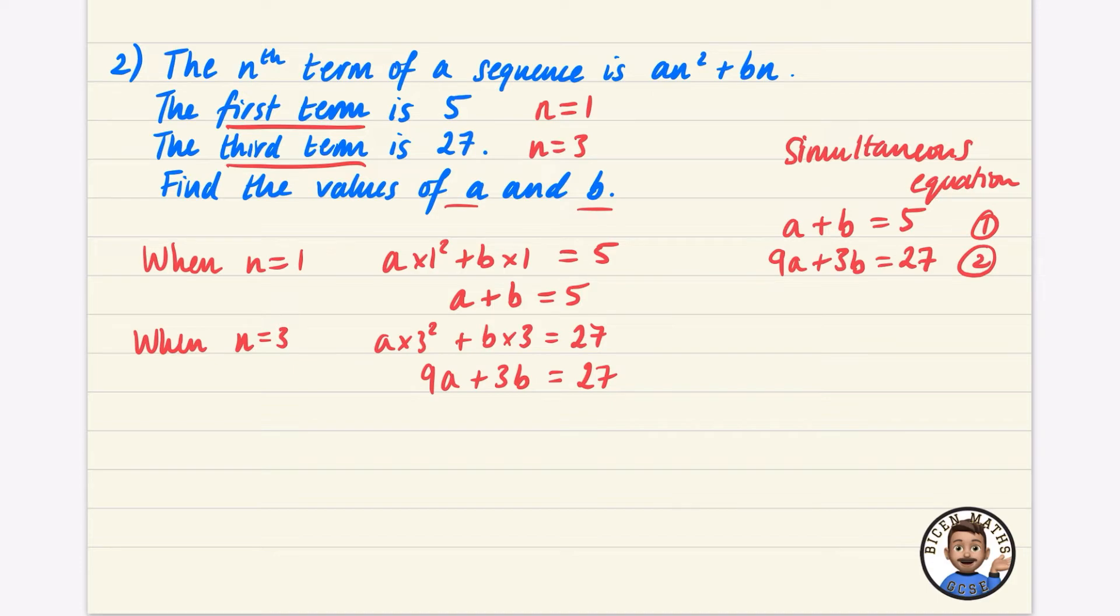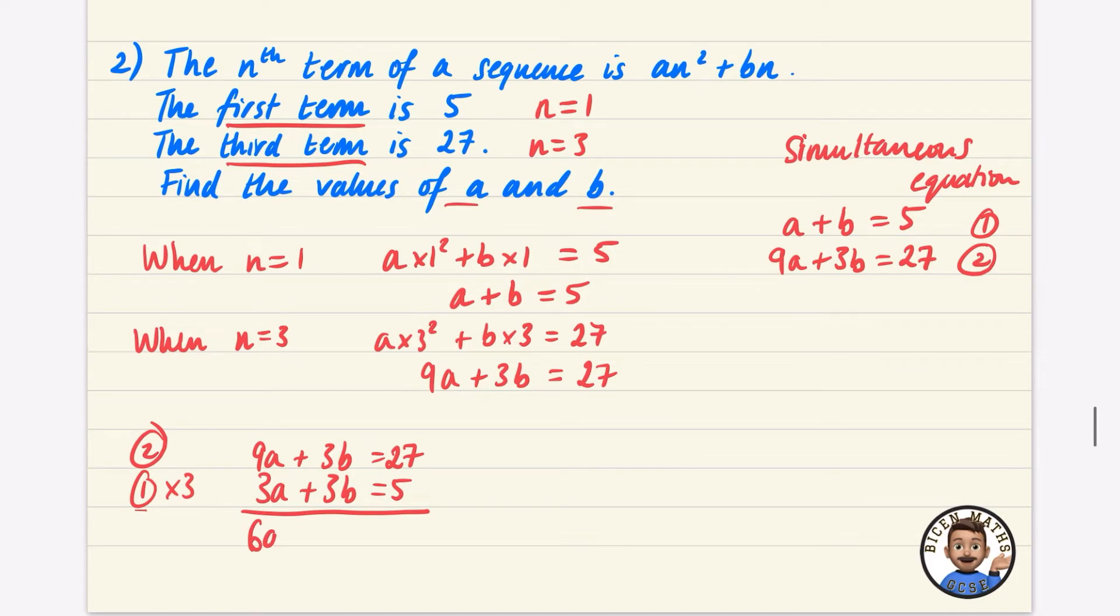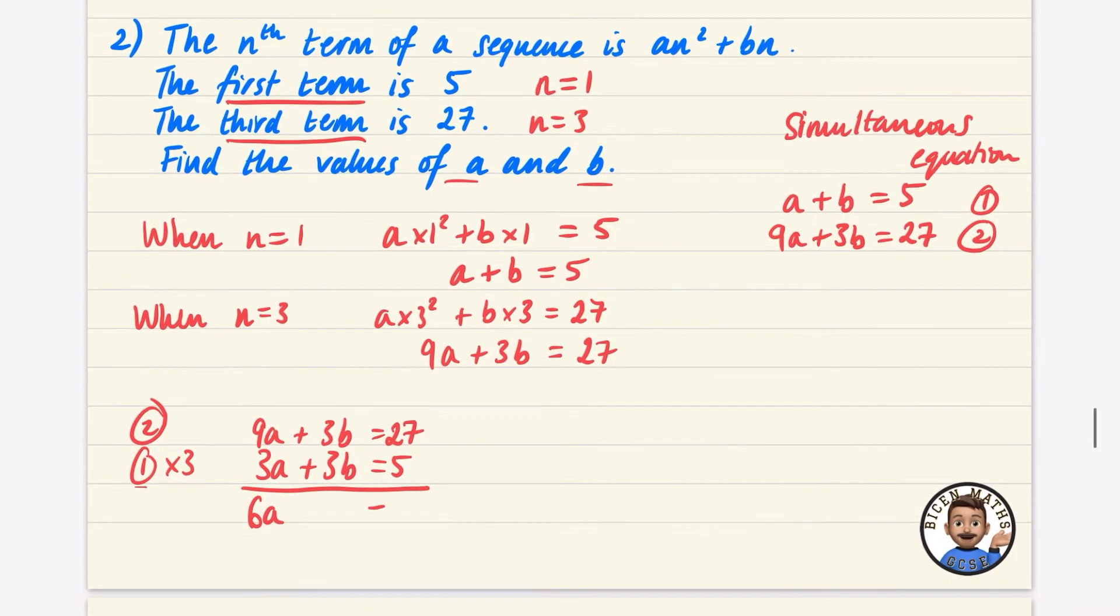So I'm going to do an elimination method here. I'm going to take number one and I'm going to times it by three. So if I take number one and times it by three, I get 3a plus 3b equals 15, and I have 9a plus 3b equals 27. I'm going to write these the other way around so it looks a little bit easier. Now what I'm going to do is subtract them to get rid of the 3b's. This is an elimination method. 9a take away 3a is 6a, the 3b's cancel, the 27 take away... oh wait.